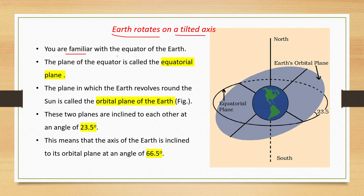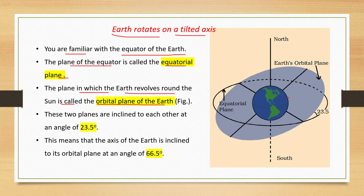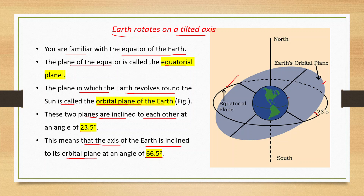The plane of the equator is called the equatorial plane. The plane in which the Earth revolves around the sun is called the orbital plane of the Earth. These two planes are inclined to each other at an angle of 23.5 degrees, which means that the axis of the Earth is inclined to its orbital plane at an angle of 66.5 degrees.